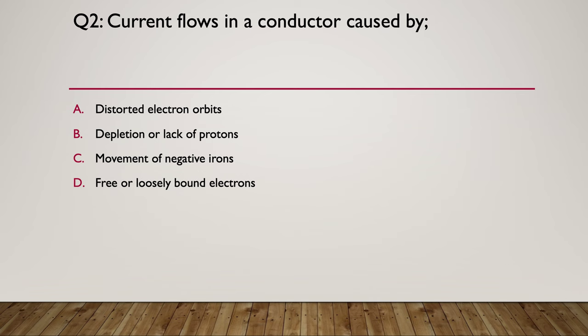Question 2, current flows in a conductor caused by. So what's the current in a conductor caused by? Distorted electron orbits? Depletion or lack of protons? Movement of negative ions or free or loosely bound electrons? So pause here.